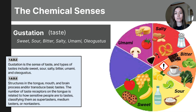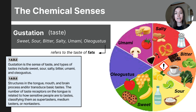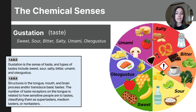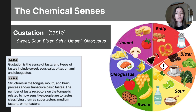The final flavor is oleogustus, which refers to the taste of fats. It's recognized by detecting fatty acids and is believed to signal energy-dense foods. Examples include olive oil, butter, nuts, and fatty fish like salmon. Each of these taste categories helps us identify and enjoy a variety of foods, but more importantly, taste helps organisms identify nutritious and safe foods while avoiding harmful substances.